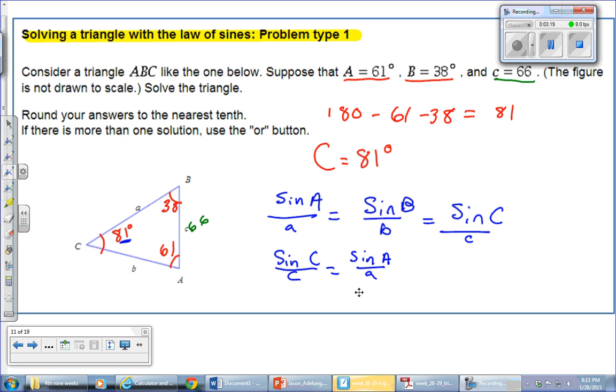So, if that's what we're doing, sine of C, since we know C now, sine of 61 degrees, oh no, sine of 81 degrees. Oh, my bad. Here, let me erase that. Sine of 81 degrees, 81 degrees divided by 66, because that's side length C,